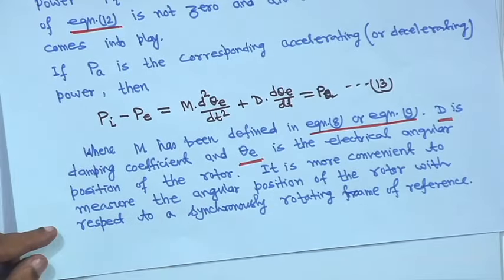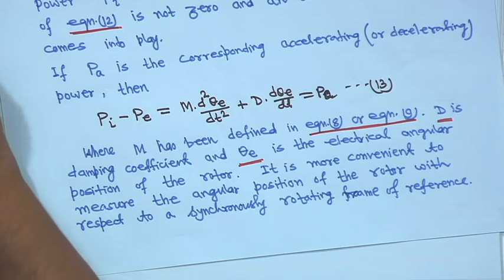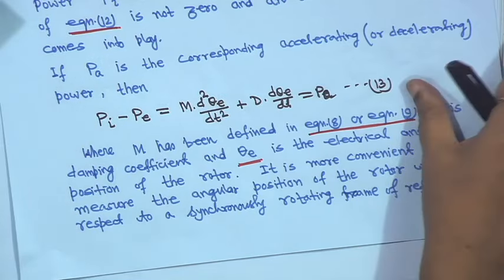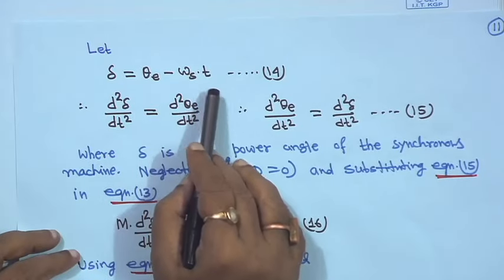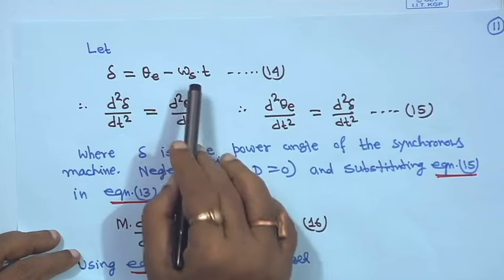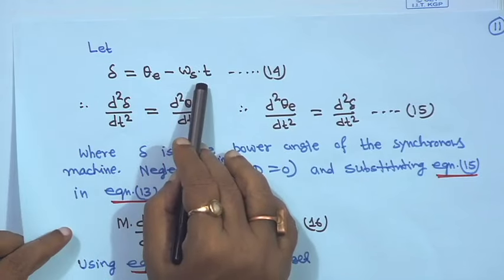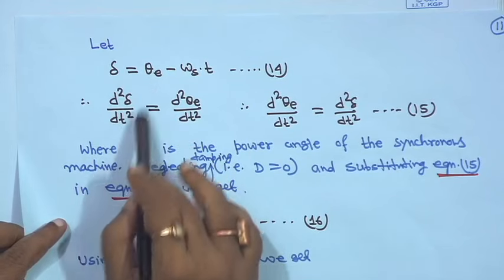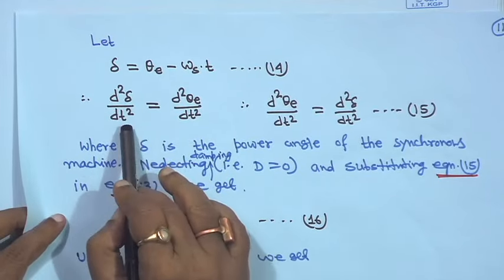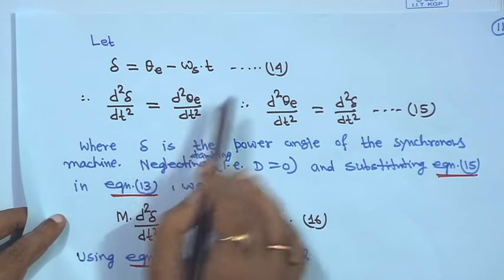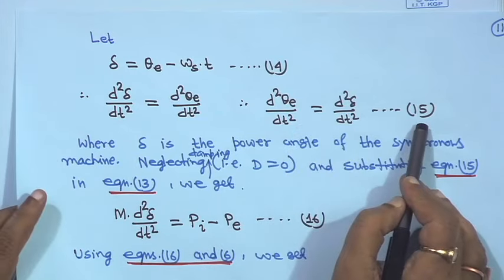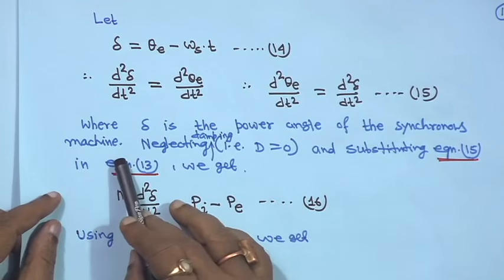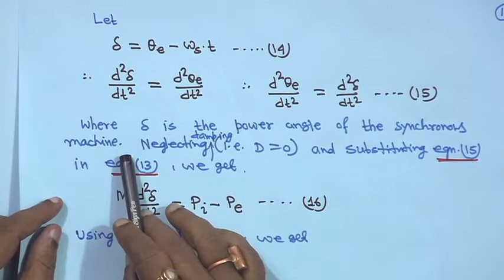It is more convenient to measure the angular position of the rotor with respect to a synchronously rotating reference frame. For stability studies we define: δ = θ_e − ωs × t, which is the angle with respect to the synchronously rotating reference frame. Taking the double derivative of this equation gives d²δ/dt² = d²θ_e/dt², which is equation 15. Here δ is the power angle of the synchronous machine, sometimes also called the torque angle.